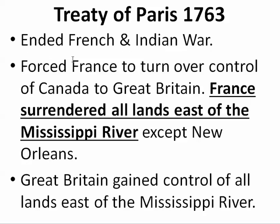Treaty of Paris, 1763 — it's going to end the French and Indian War in 1763. Two very important things are going to happen. This is going to force France to turn over control of all of Canada to Great Britain. All of the French holdings are surrendered — France surrenders all lands east of the Mississippi River. In other words, Great Britain attained control of all lands east of the Mississippi River.